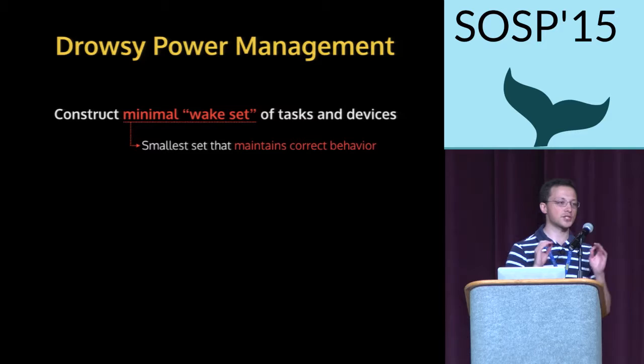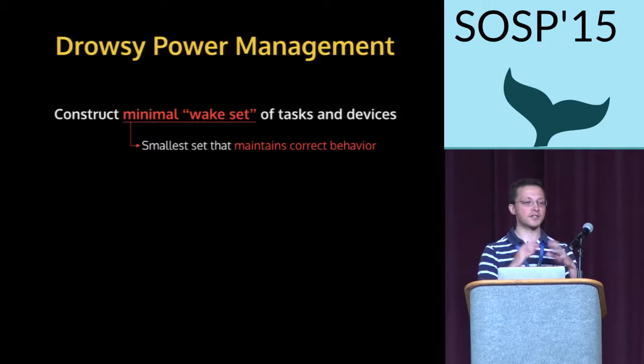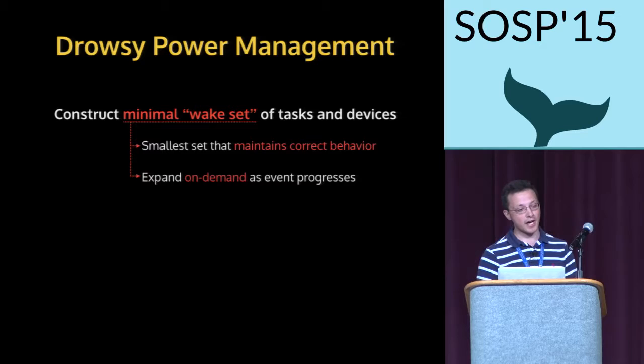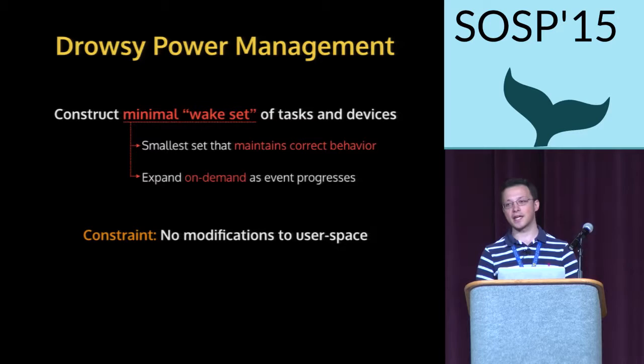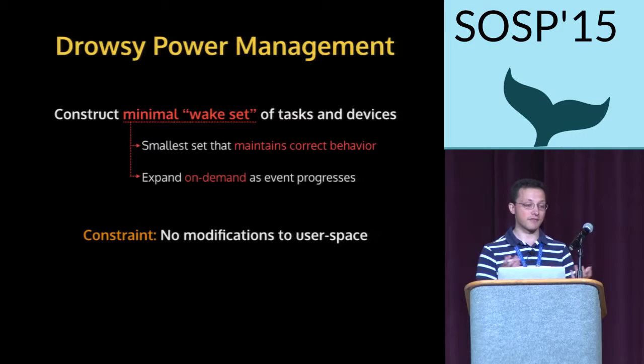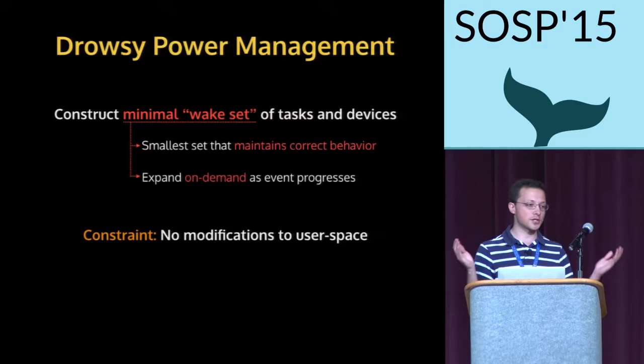Drowsy constructs the minimal wake set of tasks and devices — the smallest set that maintains correct system behavior as if all tasks and devices were included. Drowsy expands this set on demand as the event progresses. One key constraint for both design and implementation is that we don't want to make any modifications to user space, so that Drowsy can be deployed to all devices today without requiring application developers to specify what they use or make modifications.